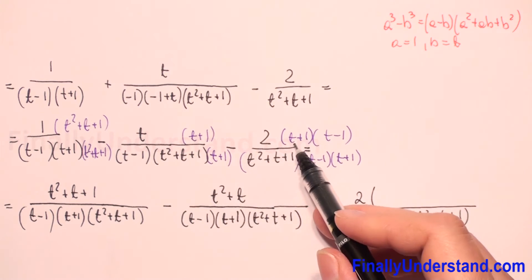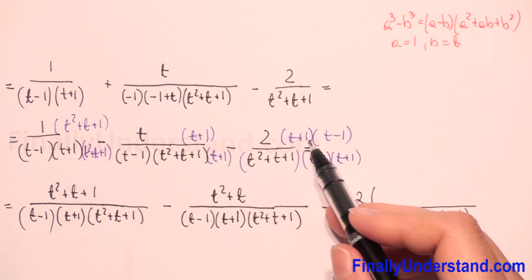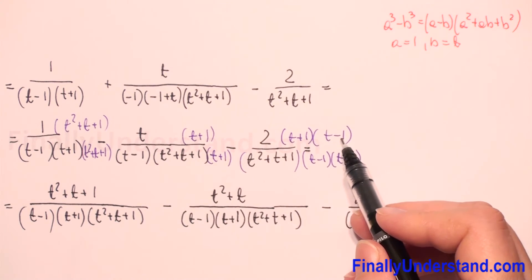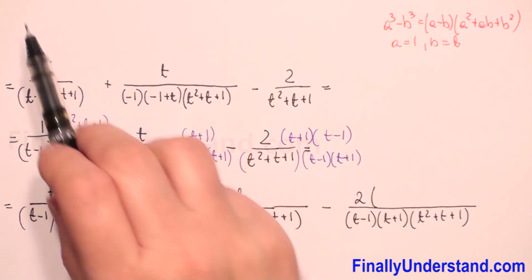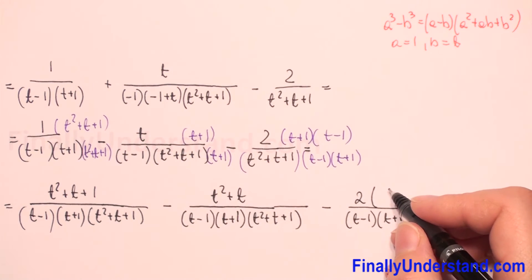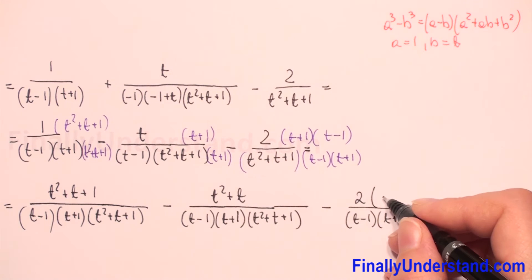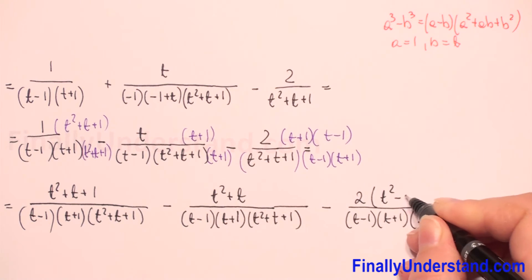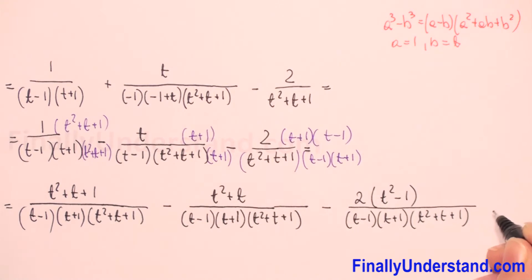And for the last fraction, t plus one times t minus one equals t squared minus one, using the difference of two perfect squares formula.